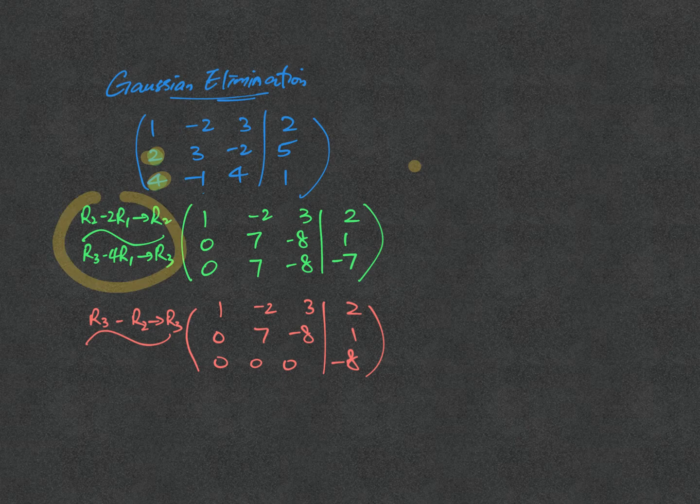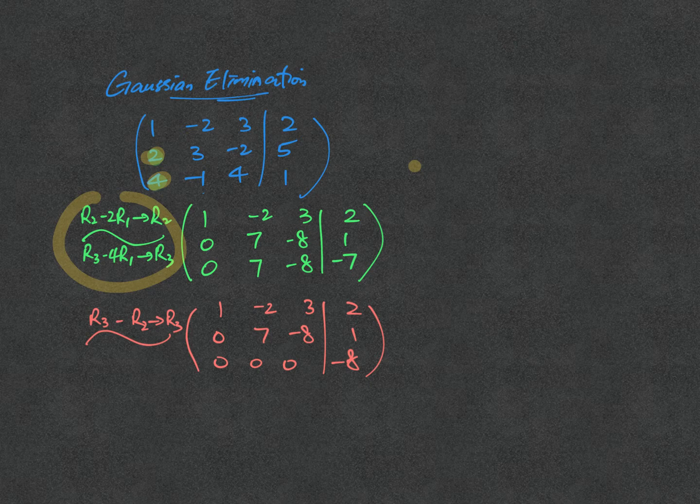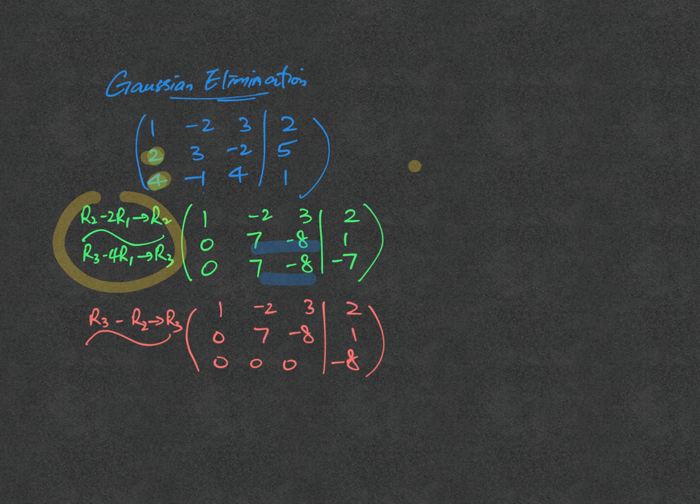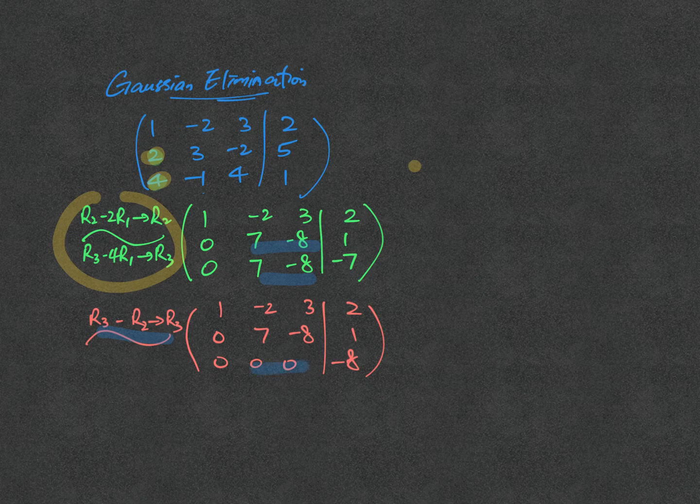I start working on the perfect row echelon form. Because I find that 7 minus 6 can be deleted, canceled directly. That's why you will see I immediately operate on row 3 minus row 2, in which I got two 0s.